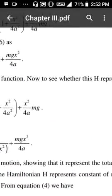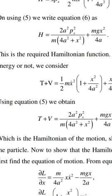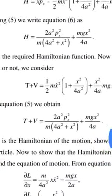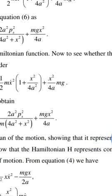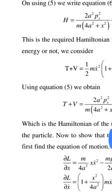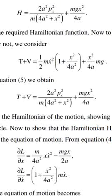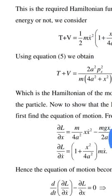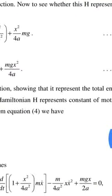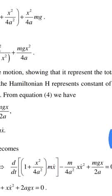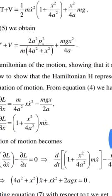To see whether H represents total energy or not, we compute T + V = (1/2)mẋ²(1 + x²/4a²) + mgx²/4a. Using the expression for Px, we obtain T + V = 2a²Px²/[m(4a² + x²)] + mgx²/4a, which is the Hamiltonian. This shows that H represents the total energy of the particle.